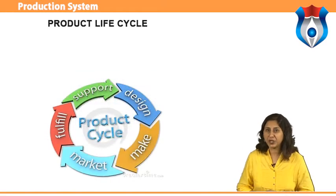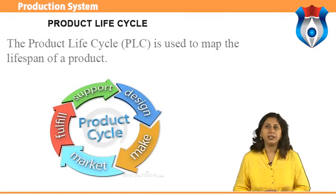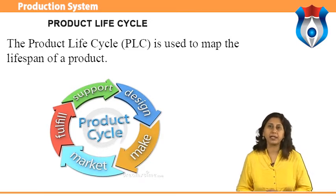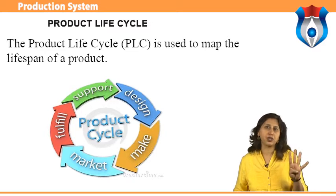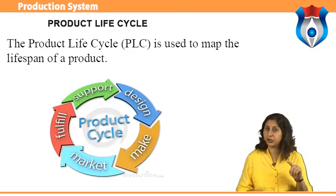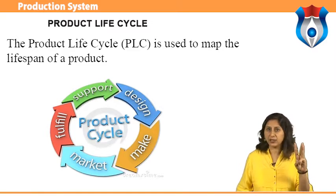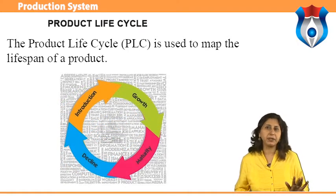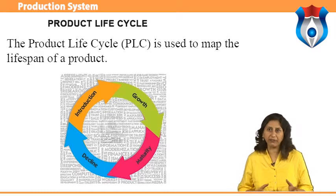Moving on to the next topic, we will study the product life cycle. The product life cycle (PLC) is used to map the lifespan of a product. There are generally four stages in the life of a product: the introduction stage, the growth stage, the maturity stage, and the decline stage. There is no set time period for the PLC, and the length of each stage may vary.